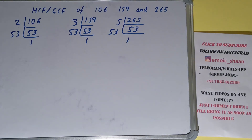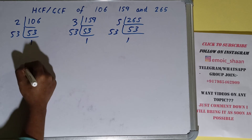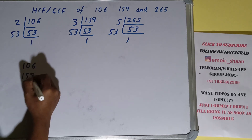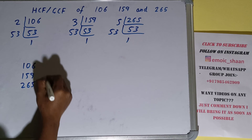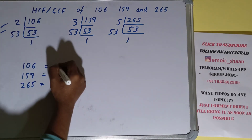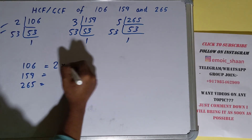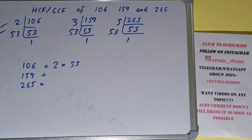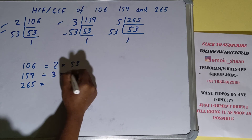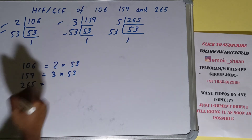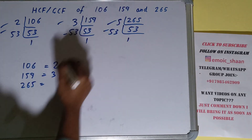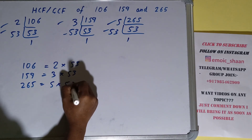We are done with the prime factorization step. The next thing we need to do is write down each of the numbers with their respective prime factors. For 106, the prime factors are 2 and 53. For 159, the prime factors are 3 and 53. For 265, the prime factors are 5 and 53.